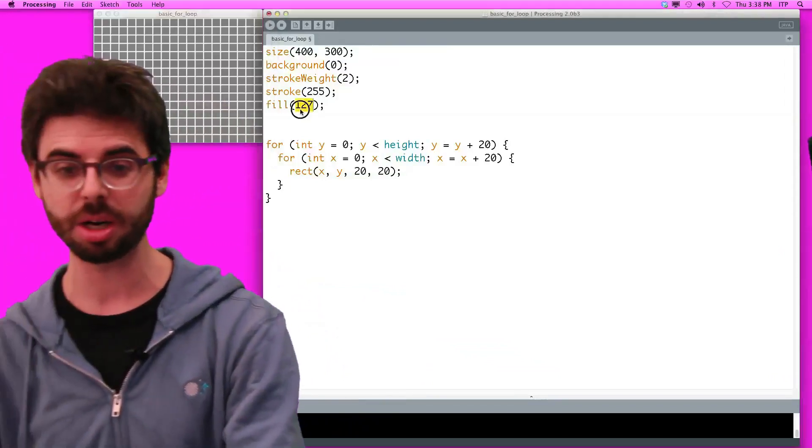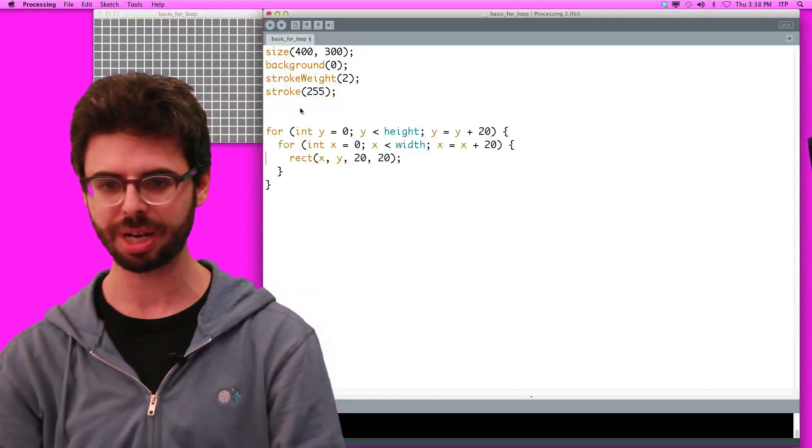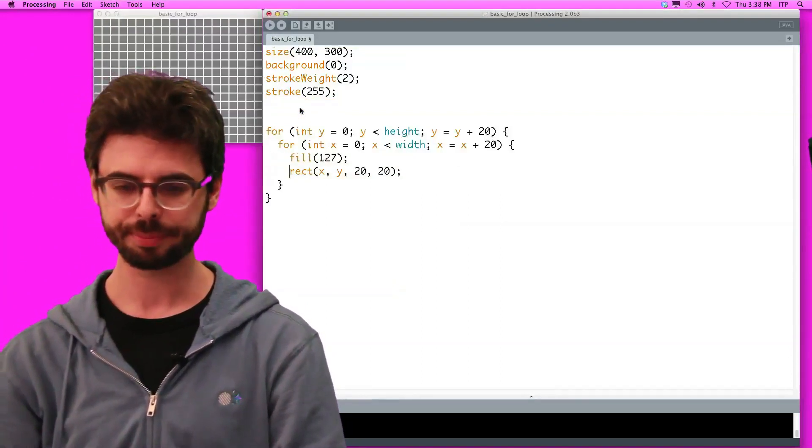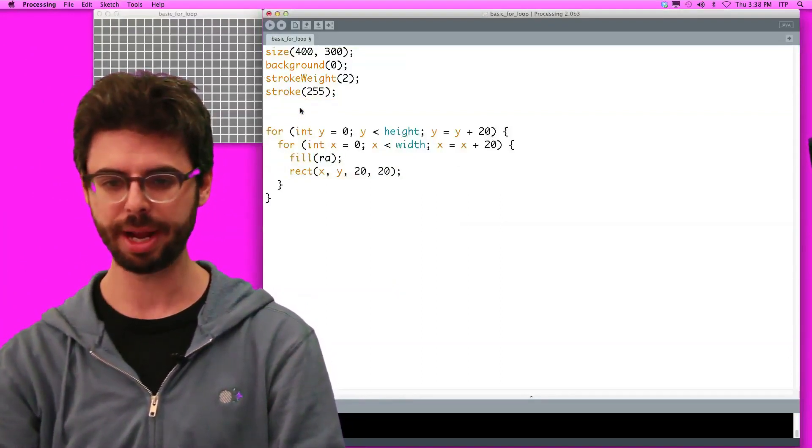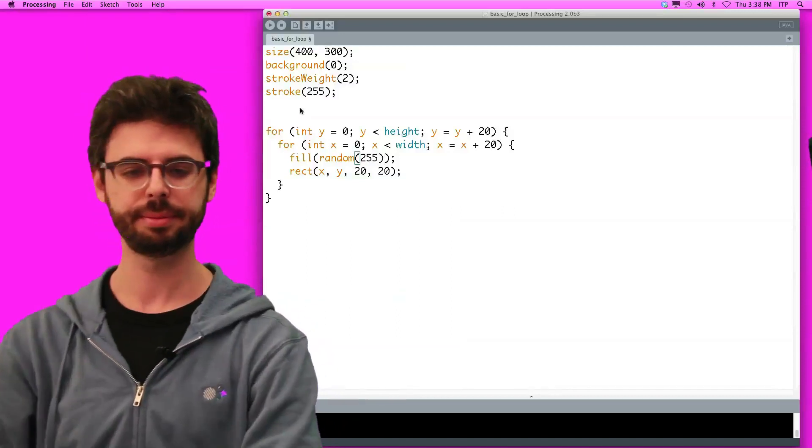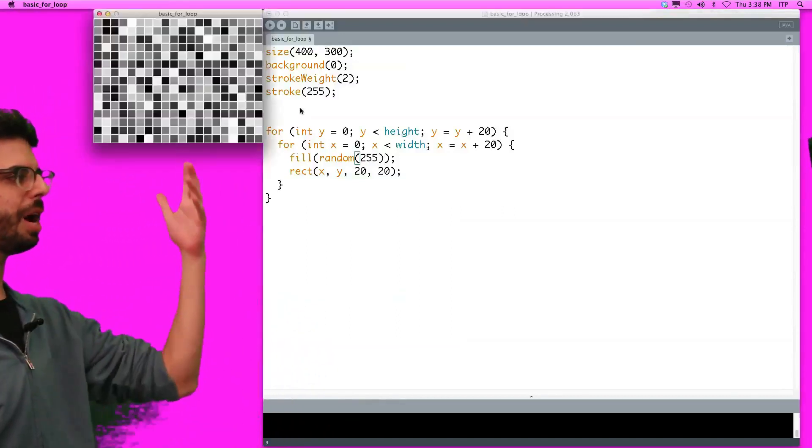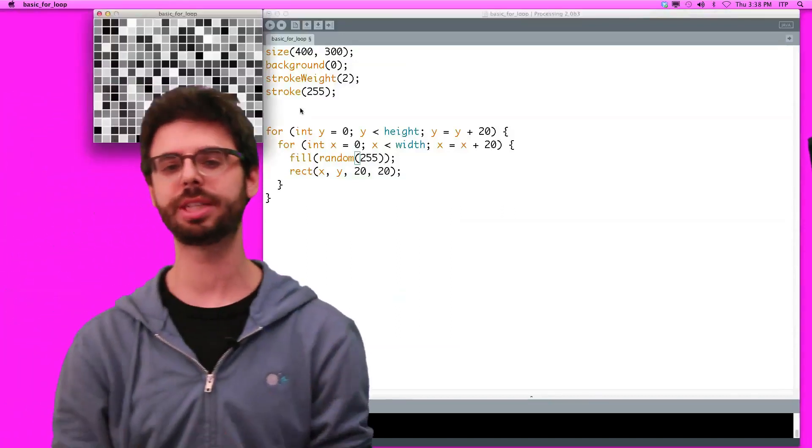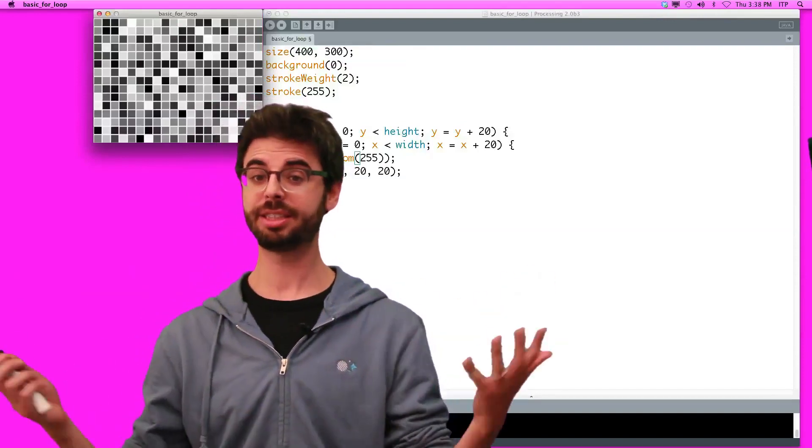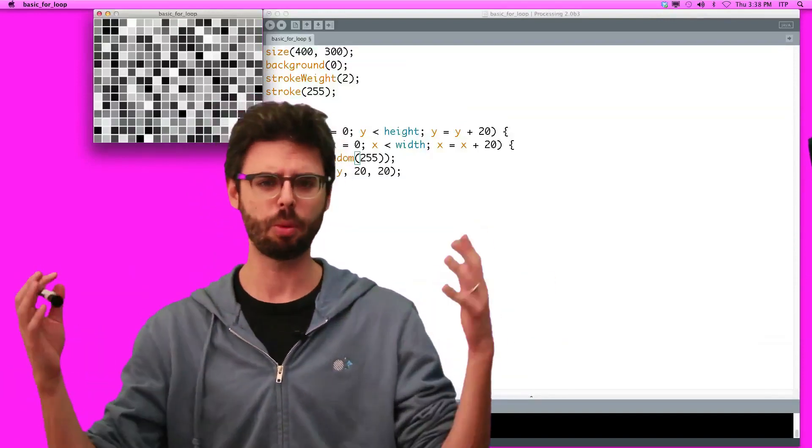Well, how do we make them all random color? Well, easy. I can just take this fill right here and say, hey, fill random 255. And there we go. Now we have this pattern where each one of those gets a random color. This is essentially like a checkerboard or chessboard.